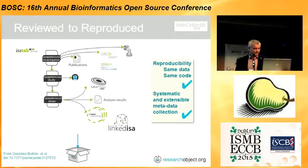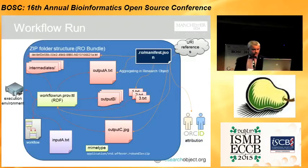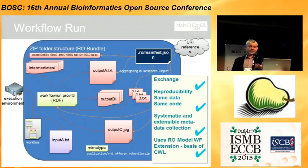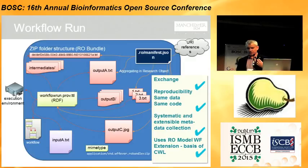With workflow runs, the idea is that a research object can capture a workflow file and how you actually run it — including the execution environment, the input data, the output data, and the algorithms used — all encapsulated into a research object. This promotes exchange, reproducibility of the same data and same code, and systematic metadata collection. The research object model can also be extended; for example, for workflow or workflow run types there are extensions to the model, and this forms the basis of the Common Workflow Language.